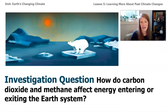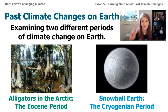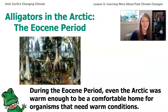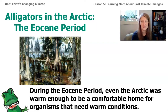Let's get back to our investigation question: how do carbon dioxide and methane affect how much energy is coming in and how much energy gets absorbed by Earth's surface? We'll read two parts of the article. The first talks about a time period in Earth's past called the Eocene. During the Eocene, the Arctic was so warm that reptiles could live there — you would never see those in the Arctic now — because the global average temperature was so much higher than it is today.